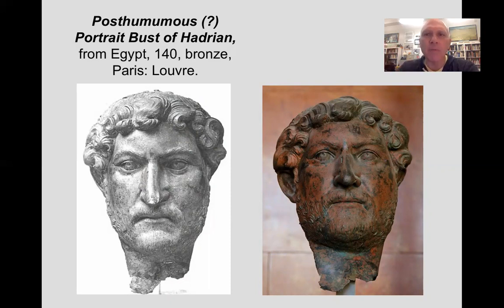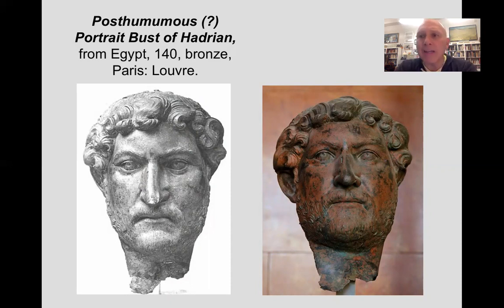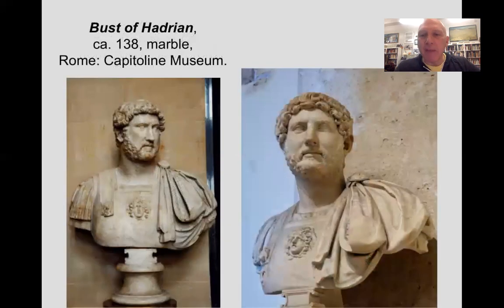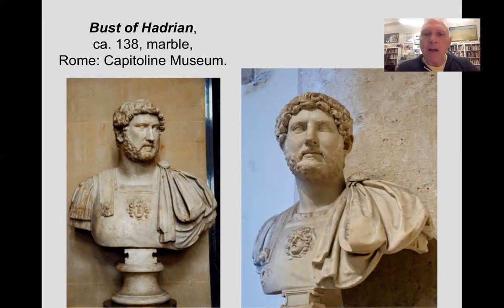There are a couple of interpretations as to why Hadrian wore a beard. One is the argument that he was cultivating things Greek — he wanted to be seen as, perceived as, a Greek philosopher. Another may be a more practical reason: that he had his face pockmarked, and some sculptures actually record the fact that he had pockmarks on his cheeks. He may have wished to cover those things by growing a full beard. Nevertheless, we typically see him as a bearded emperor, much like you see in the sculpture here in Rome in the Capitoline Museum.